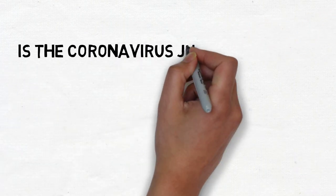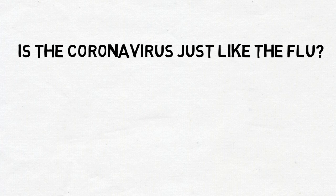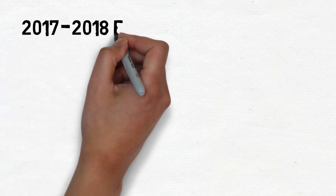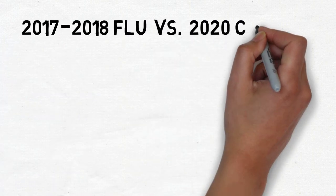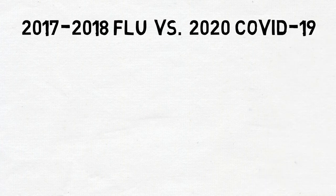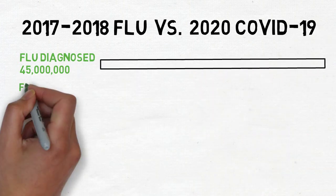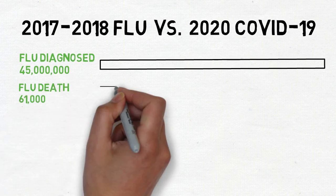So some people have been telling you that the coronavirus is just like the flu. Is it? Let's look at some data. In the flu season of 2017 to 2018, the CDC estimates 45 million people had the flu with 61,000 deaths. That's a very high number.